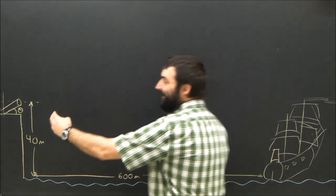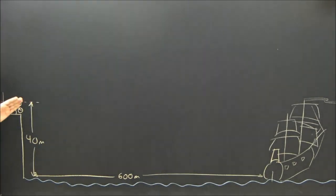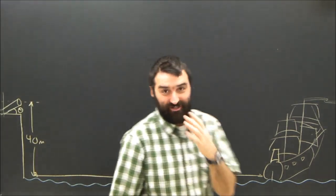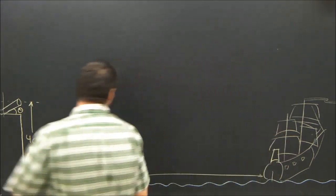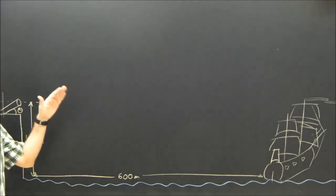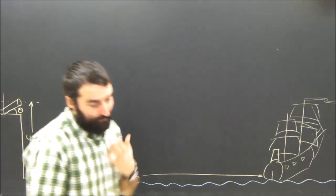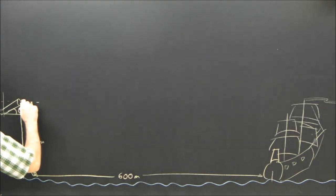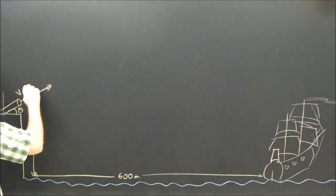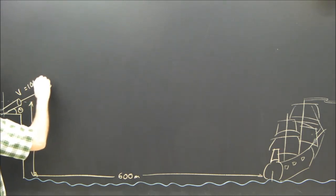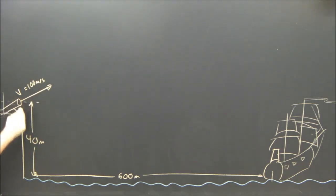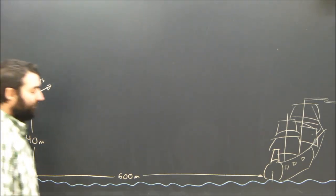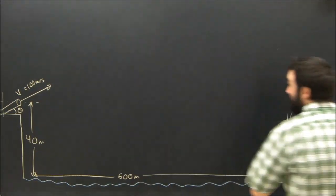Okay, so in this question, the cannon is elevated by an unknown number of degrees. Well, that's where the question is. In order for the cannon to hit the ship, what angle does it need to be tilted at? And I guess I need to know the initial velocity. The cannon has a muzzle velocity of 100 meters per second, and the lip of the cannon is 40 meters above the water, and the ship is 600 meters away.